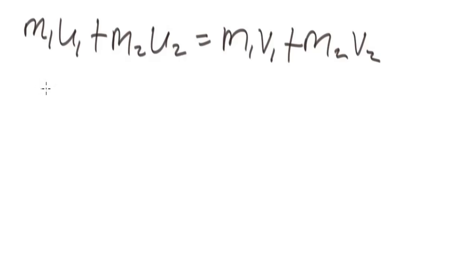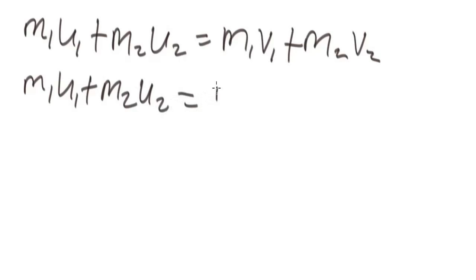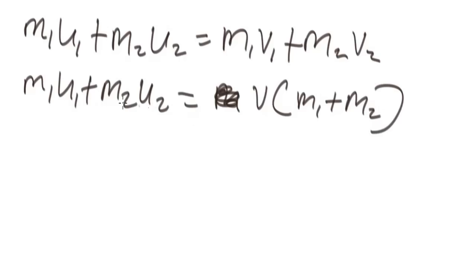Kinetic energy is not conserved in perfectly inelastic collision. For perfectly inelastic collision, it can be calculated using the formula M1U1 plus M2U2 equals V in bracket M1 plus M2. Note that most physics questions on collision usually come from perfectly inelastic collision, so take note of that. Now let's get some problems and solve.